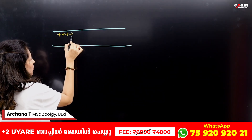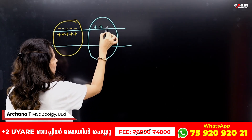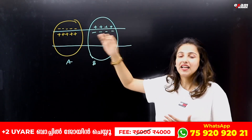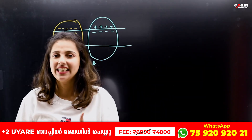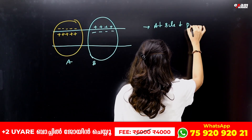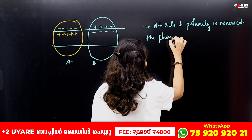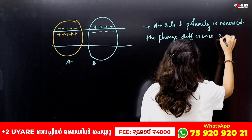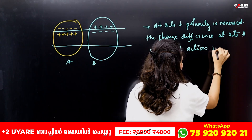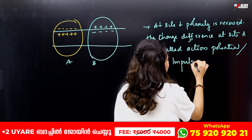This change — where positive charge is now inside and negative charge outside at site A — is the stimulus response. The membrane permeability changes, sodium ions flood in, and this polarity reversal at site A is called action potential or nerve impulse. The membrane at site A is now depolarized.